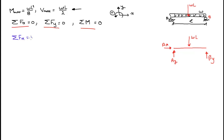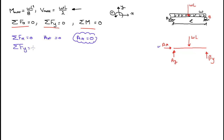Applying the first equation, ΣFx = 0: the only force in the x direction is Ax, so Ax = 0. Now ΣFy = 0: Ay is positive going up, minus WL going down, plus By equals zero, which gives us Ay + By = WL.